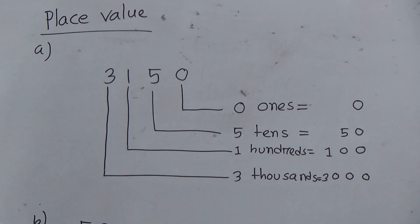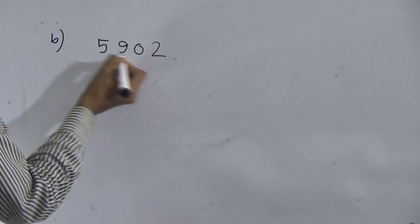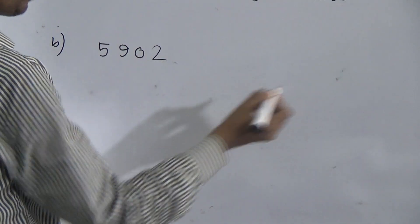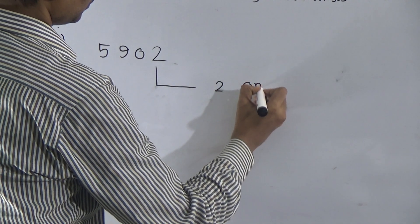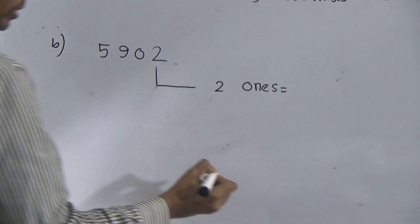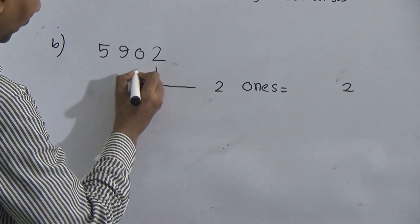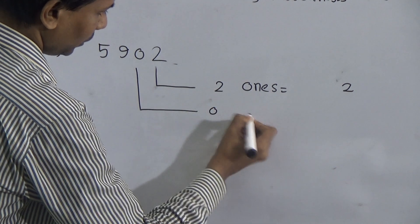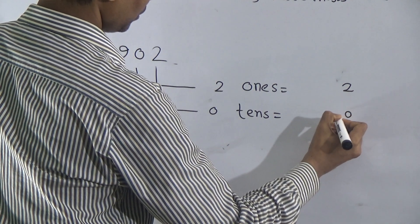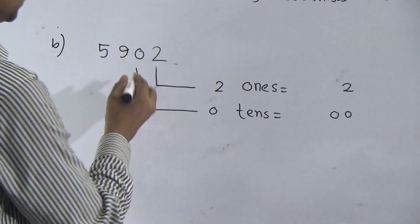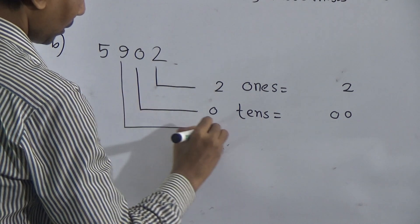Similarly, you see the B number question. This is the place value of ones, tens, hundreds, thousands — all the problems are the same. Look, write two ones. You see the spelling — not 'ones' O-N-S — two ones, that means two. Then zero, zero, zero tens, that means zero. Zero tens, that means zero. Then nine nine.